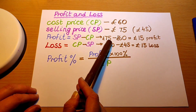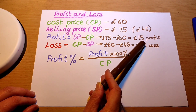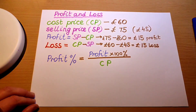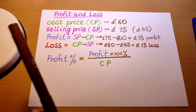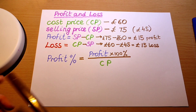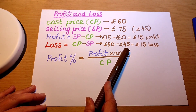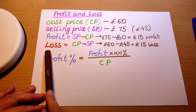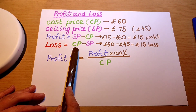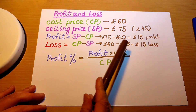My selling price was 75 pounds, cost price is 60 pounds, my profit is 15 pounds. Cost price is always constant. What if I couldn't sell my bag for 75 pounds and I only managed to sell it for 45 pounds? I incurred a loss. Loss is calculated by cost price take away selling price, so in this case my loss was 15 pounds.